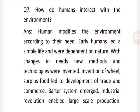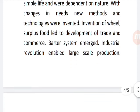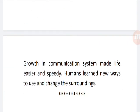Question 7: How do humans interact with environment? Answer: Humans modify the environment according to their needs. Early humans led a simple life and were dependent on nature. With change in needs, new methods and technologies were invented, such as the wheel. Surplus food led to development of trade and commerce, and the barter system emerged. The Industrial Revolution enabled large-scale production, and growth in communication systems made life better.